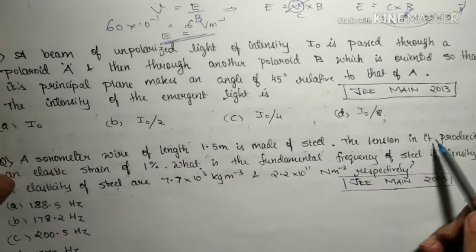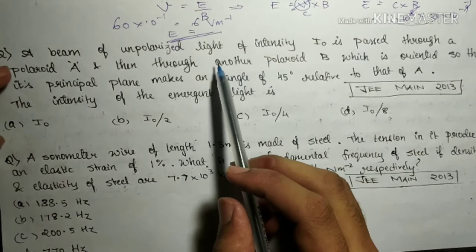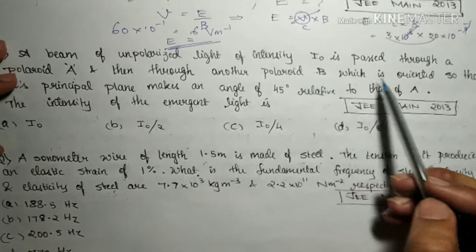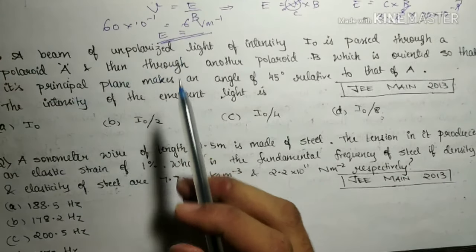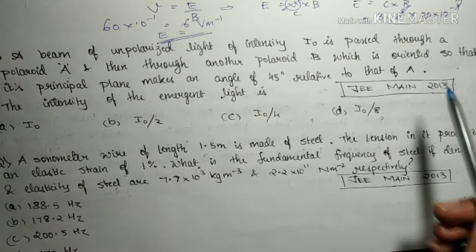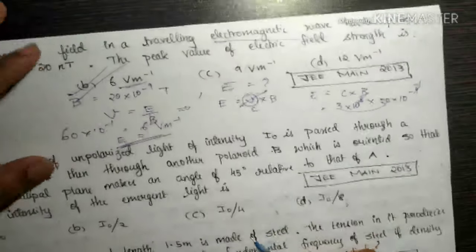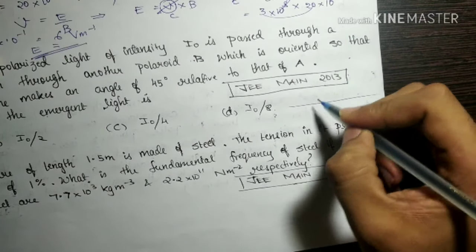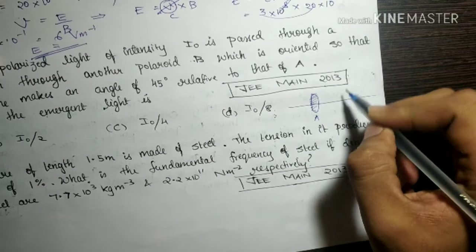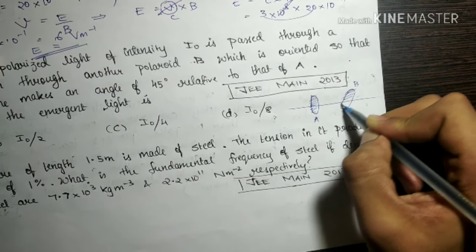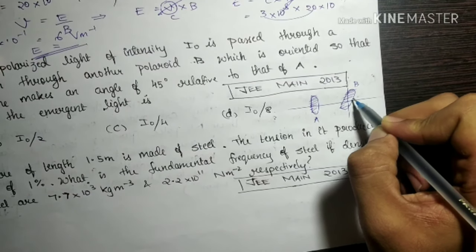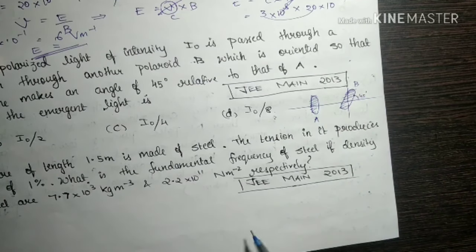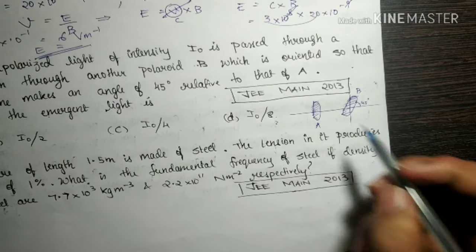The next question says: a beam of unpolarized light of intensity I₀ is passed through a polaroid A, and then through another polaroid B which is oriented so that its principal axis makes an angle of 45 degrees relative to that of A. Let me draw the situation — polaroid A is vertical and polaroid B is at 45 degrees to that of A, which is also 45 degrees to the horizontal.